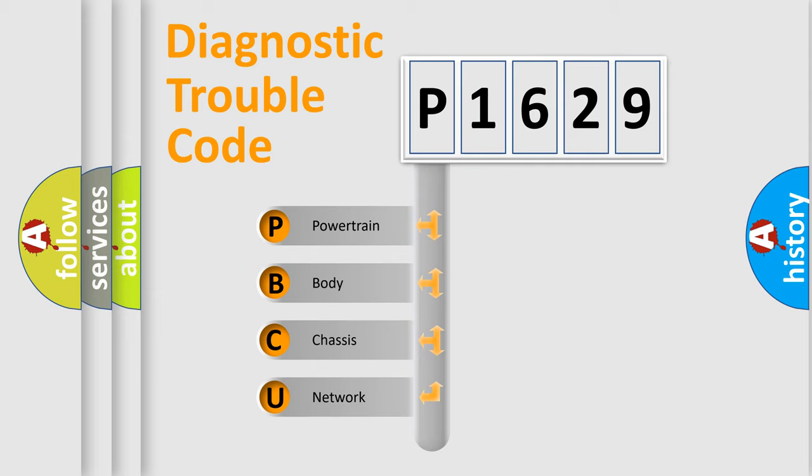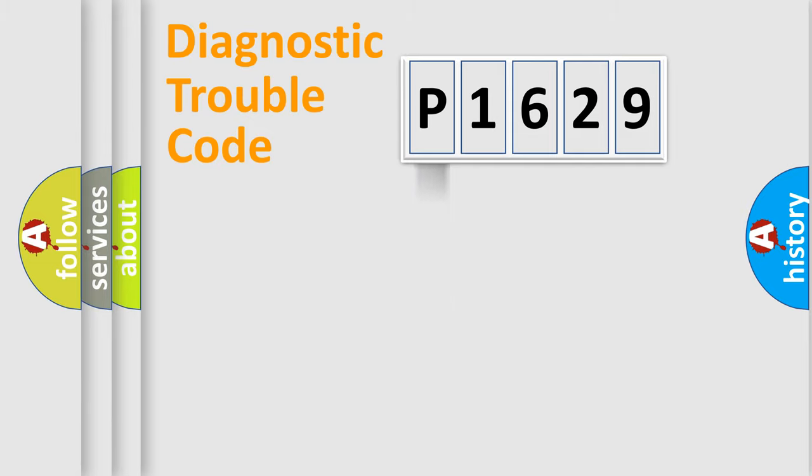We divide the electric system of automobile into four basic units: powertrain, body, chassis, and network. This distribution is defined in the first character code.